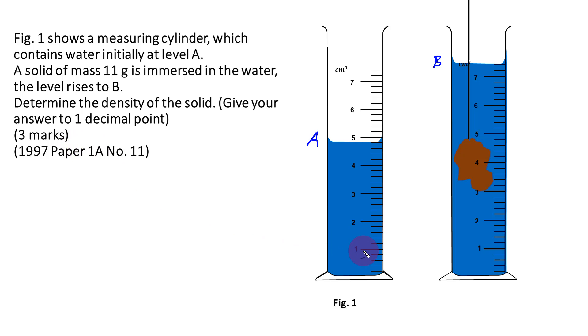When a question contains a measuring cylinder, the first thing you do is determine the volume represented by one division on the scale. You do this by finding the difference between any two adjacent numbers. For example, the difference between 3 and 2 is 1, so we get a volume of 1 centimeter cubed.